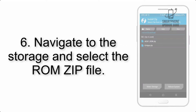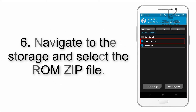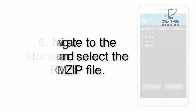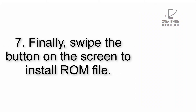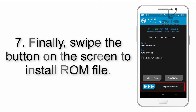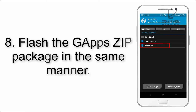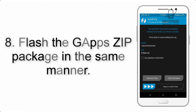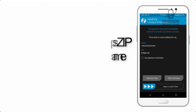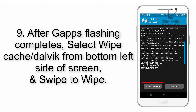Step 5: Go back to the recovery main screen and tap on the Install button. Step 6: Navigate to the storage and select the ROM zip file. Step 7: Swipe the button on the screen to install the ROM file. Step 8: Flash the GApps zip package in the same manner.